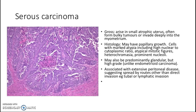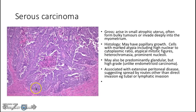Serous carcinoma grossly arises in a small atrophic uterus and may eventually form bulky tumors or invade deeply into the myometrium. Histologically, it presents as papillary growth with branching, tree-like stromal cores surrounded by malignant epithelial cells. These cells have marked atypia with high nuclear-to-cytoplasmic ratio, atypical mitotic figures, hyperchromasia, and prominent nucleoli. It may be predominantly glandular but at very high grade, unlike endometrioid carcinoma which may be low to moderate grade. It is associated with extensive peritoneal disease, suggesting spread via tubal or lymphatic invasion rather than direct invasion alone.